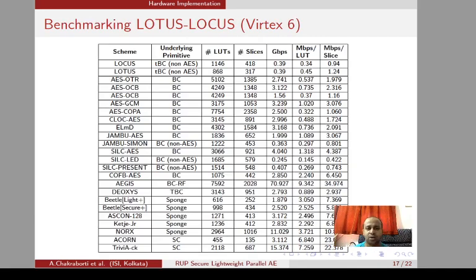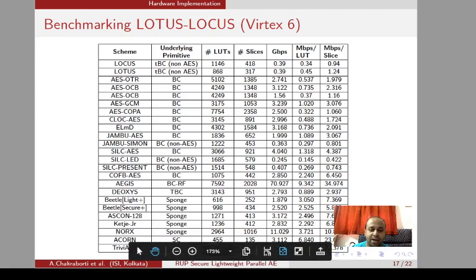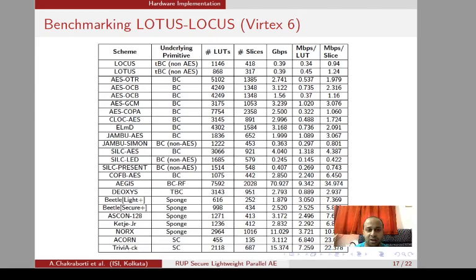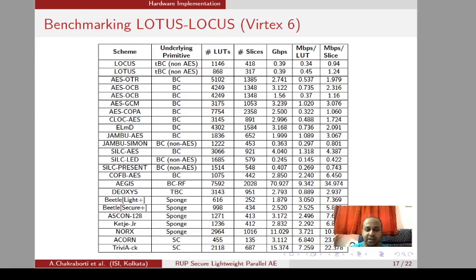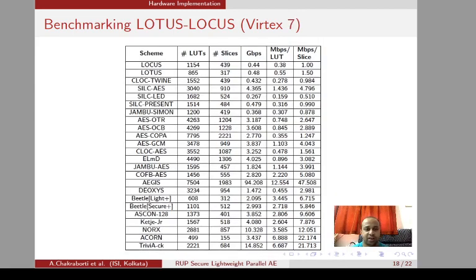We have also benchmarked LOTUS and LOCUS with some existing designs. Designs like Acorn, Beetle-Light, Beetle-Secure, and a few others are better than LOTUS and LOCUS in terms of hardware area as well as throughput-area efficiency ratio. However, LOTUS and LOCUS provide versatile features such as additional INT-RUP security and implementation suitability for both faster and lighter platforms. Overall, LOTUS and LOCUS achieve extra features beyond the other designs.